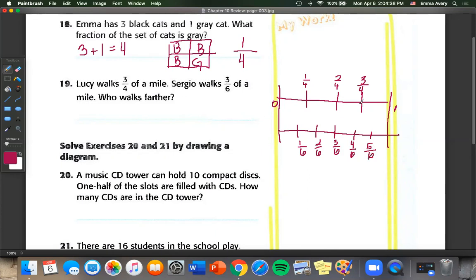So Lucy walks three fourths of a mile. So that's right here. And Sergio walks three sixths. So which one of these is more? Well, three fourths is more. So Lucy walks farther.